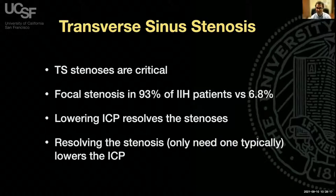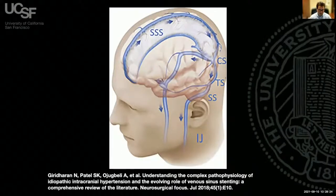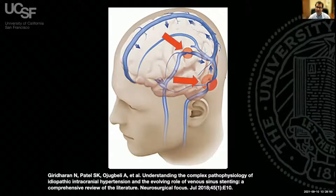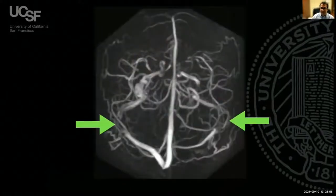Lowering the intracranial pressure resolves the transverse sinus stenosis, and resolving the stenosis with a venous sinus stent also lowers intracranial pressure. The superior sagittal sinus drains into the torcula, which splits into the patient's right and left transverse sinus, goes down to the sigmoid sinus, and exits through the jugular veins. These patients develop stenosis at the lateral margins of the transverse sinuses. Here is a typical MR venogram showing the stenosis gaps in the venous sinuses laterally.